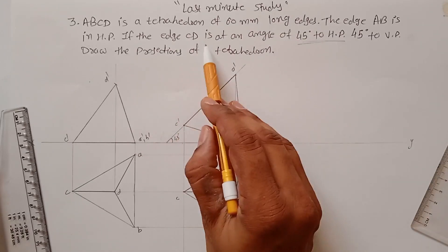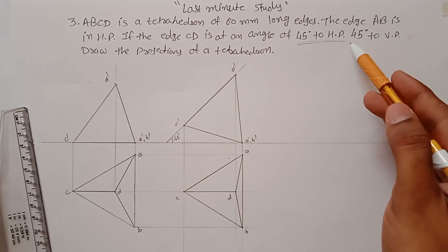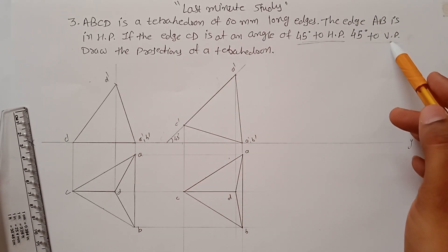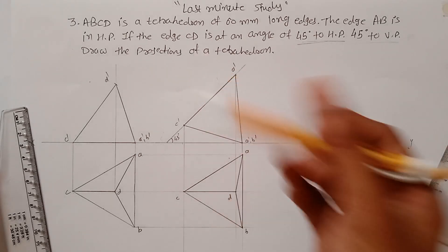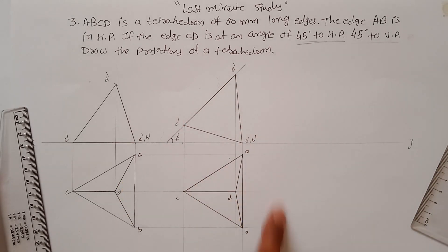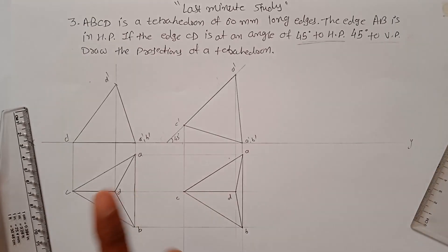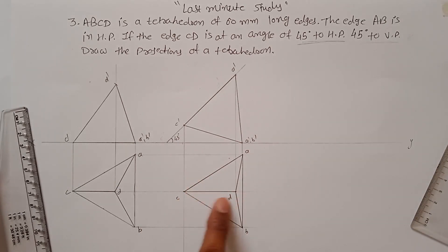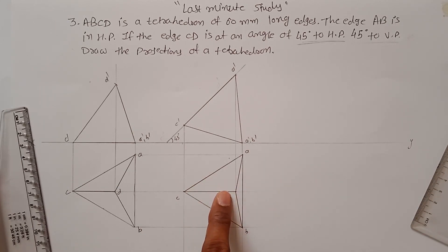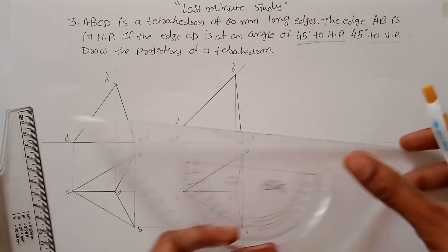This is the most important part — in the third position, the edge CD is at an angle of 45 degrees with the HP and the same edge is also inclined at 45 degrees with the VP. Normally you would take CD parallel to XY and rotate it 45 degrees, but here you need to understand the concept of projection of planes — if a line is inclined to both HP and VP, you have to find the apparent angle first.